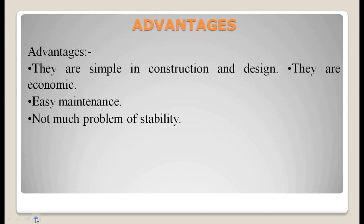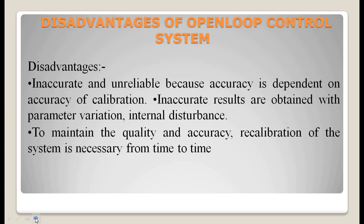Advantages of open loop control systems: they are simple in construction and design, economic, easy to maintain, and not much problem of stability. Disadvantages: they are inaccurate and unreliable because accuracy is dependent on the accuracy of calibration. Inaccurate results are obtained with parameter variation or internal disturbance. To maintain quality and accuracy, recalibration of the system is necessary from time to time.